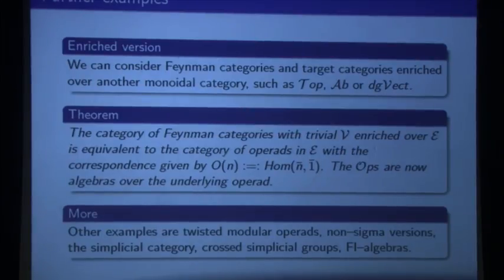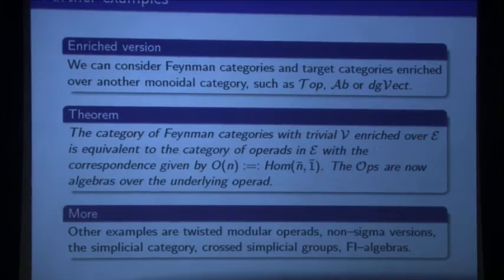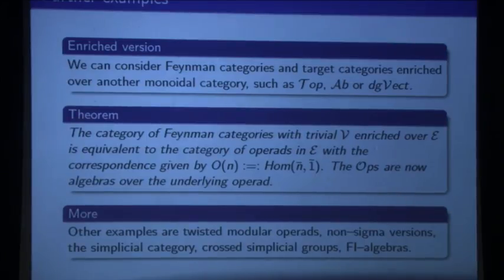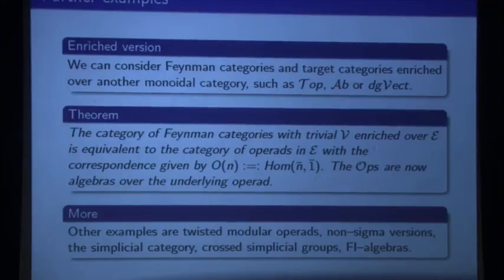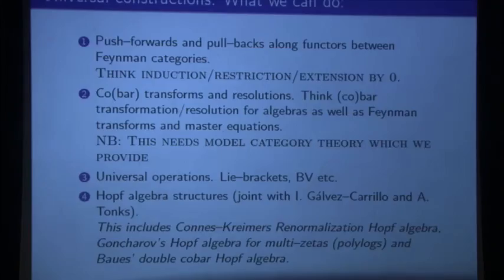And in this case the F-ops are actually algebras over operads — so you see now it starts to be different from what you started with. You can also do non-sigma versions. The simplicial category is actually a Feynman category. If you take a crossed simplicial group, that will give you a Feynman category. If you take FI-algebras — Benson-Farb's wonderful invention of FI-algebras for stable representation theory, which are basically finite sets with injections — that's also a Feynman category. So the idea was to get something like operads but you get something more.